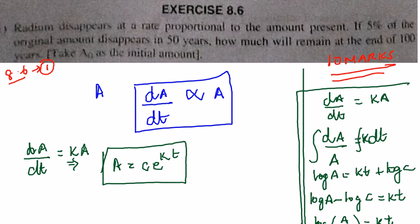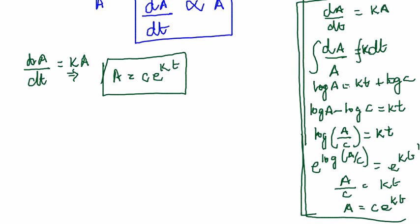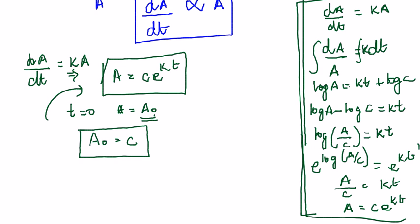They say that 5% of the original amount disappeared in 50 years, and they are asking us to find how much will remain at the end of 100 years. They are asking us to take A₀ as the initial amount. So, at time T = 0, A is equal to A₀. Substituting these in the equation, we get A₀ = C·e^(K×0), and since e^0 = 1, we get A₀ = C.